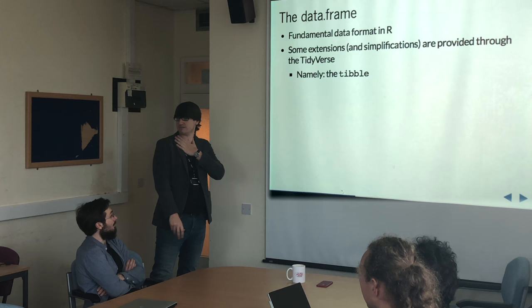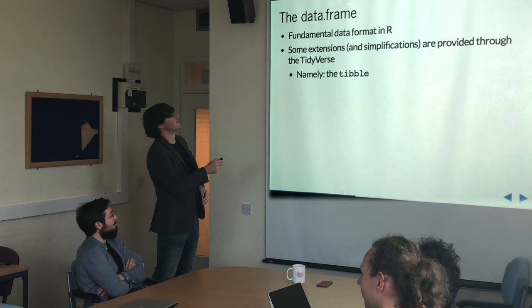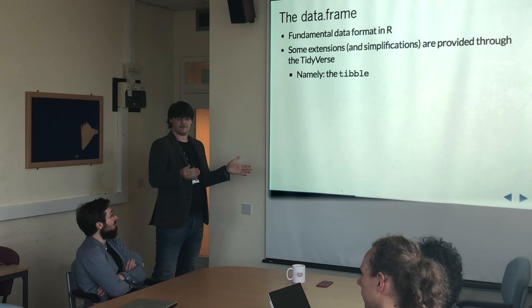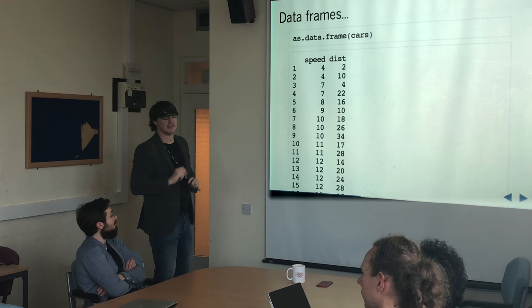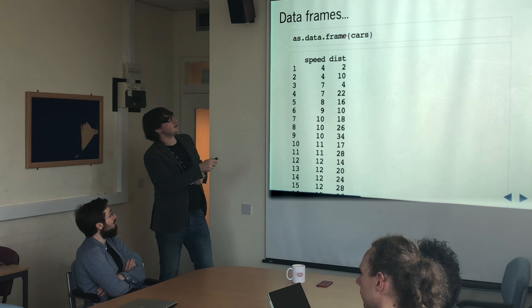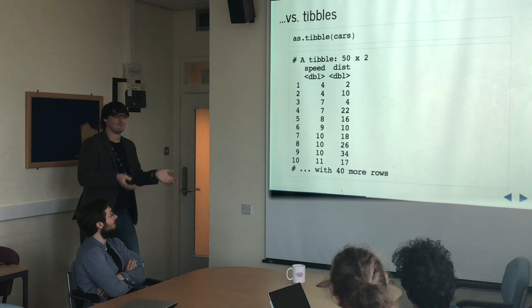I'm assuming everyone here has played around with Python at some point. Everyone's used pandas data frames — the idea of a data frame is exactly the same in R. What you have is a series of vectors of the same length; they can be any data type. You also have something called a tibble, which is a data frame with some extra stuff around the edge. The reason it's called a tibble is because it's like a table, but slightly different.